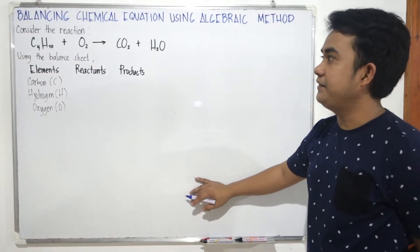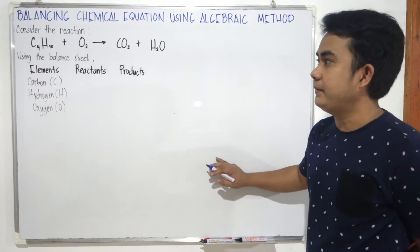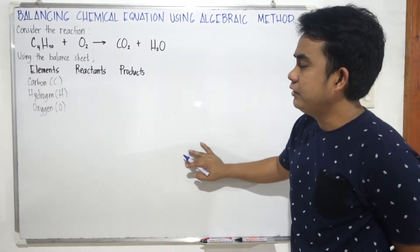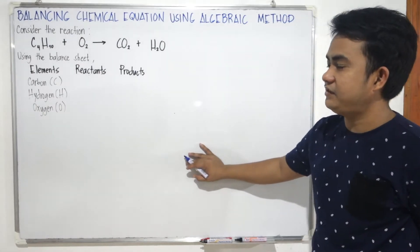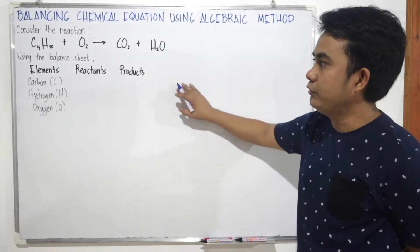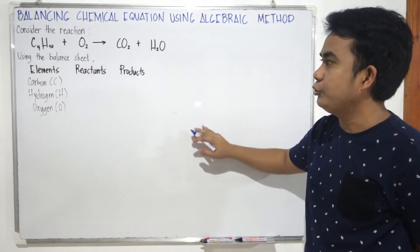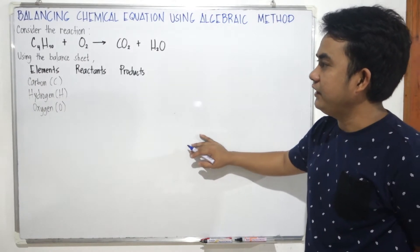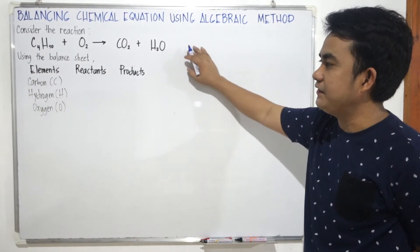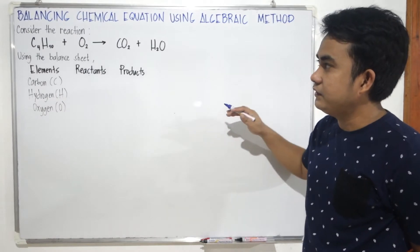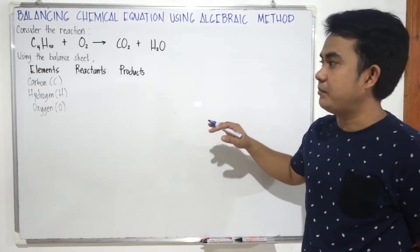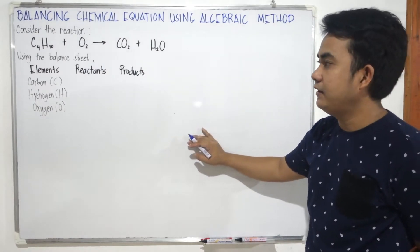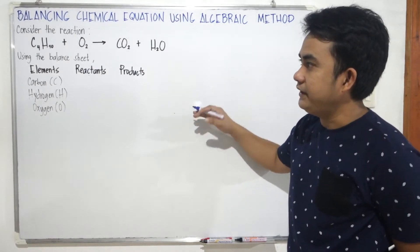For us to understand balancing chemical equations using algebraic method, we will consider this chemical reaction. So, we have butane or C4H10 will react with oxygen O2 to form carbon dioxide CO2 plus water H2O. As you can see, it can be balanced using inspection method, but in this topic, we'll balance it using algebraic method.